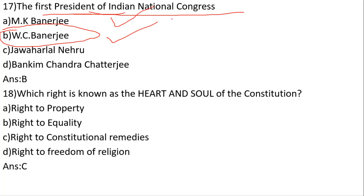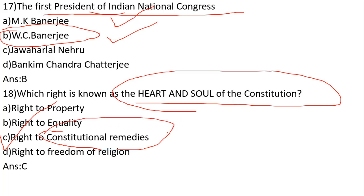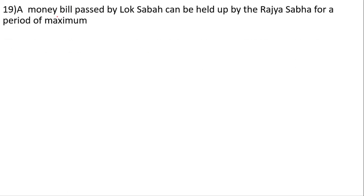Which right is known as the heart and soul of the constitution? Options: Right to Property, Right to Equality, Right to Constitutional Remedies, Right to Freedom of Religion. The correct answer is C — Right to Constitutional Remedies is called the heart and soul of the constitution.